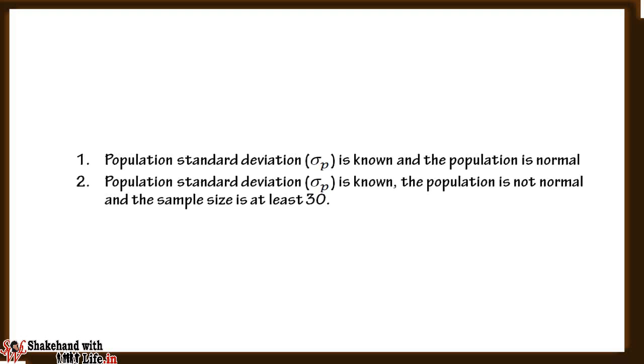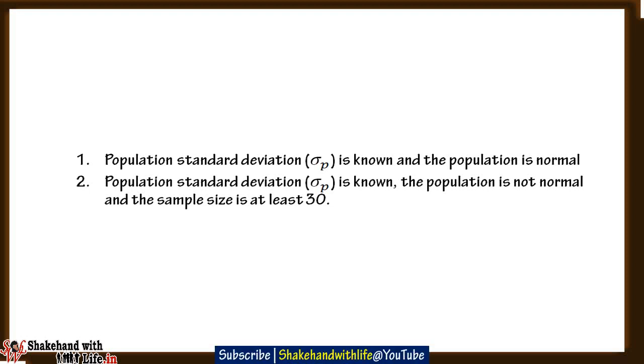There are two cases in which the Z test can be used. Number one: when the population standard deviation sigma P is known and the population is normal. The second case is when the population standard deviation sigma P is known, the population is not normal, and the sample size is at least 30.